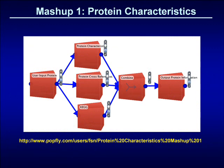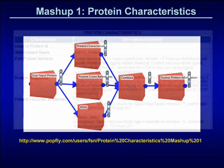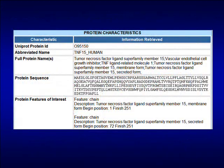This first mashup takes a protein ID and retrieves known characteristics about the protein from the various databases. The ID is passed from the user input protein block to the processing blocks: protein characteristics, protein cross-references and KEGG. Once the relevant information has been retrieved, it is combined using the combined block and displayed using the output protein information block. The results are displayed in a table such as the one shown here.